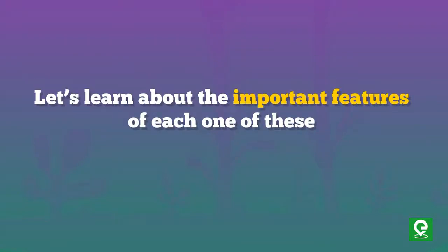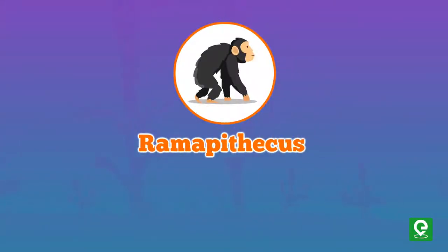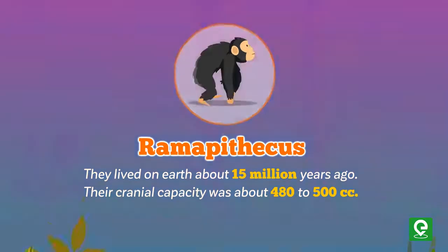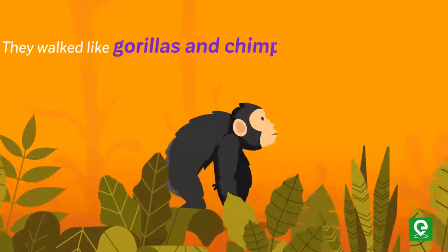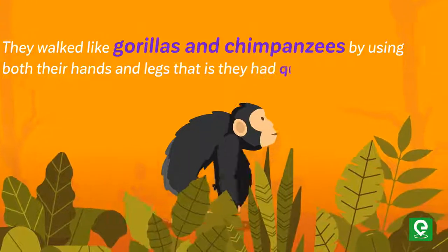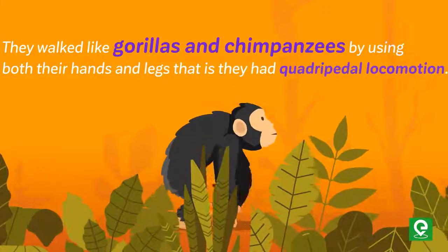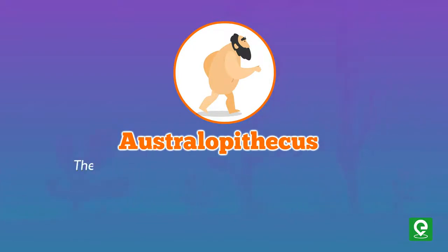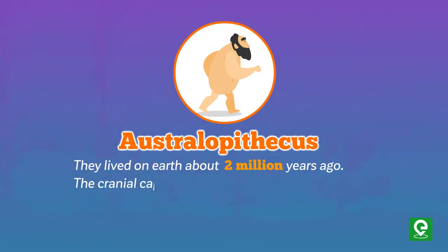Ramapithecus lived on Earth about 15 million years ago. Their cranial capacity was about 480 to 500 CC. They walked like gorillas and chimpanzees, using both their hands and legs — that is, they had quadrupedal locomotion.